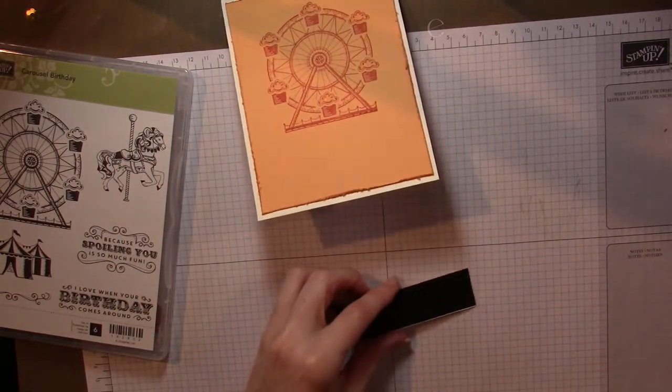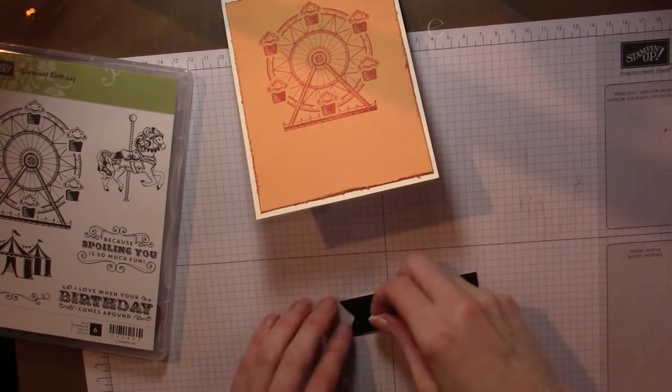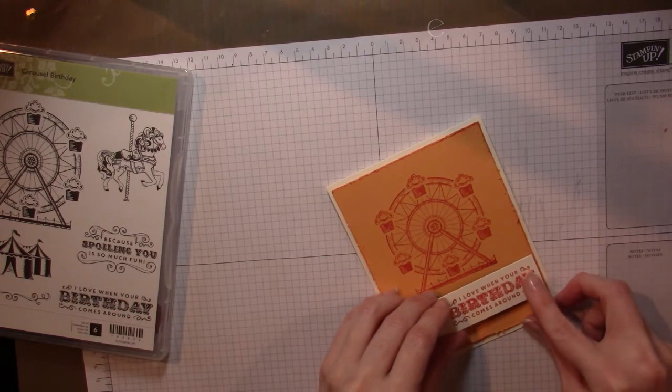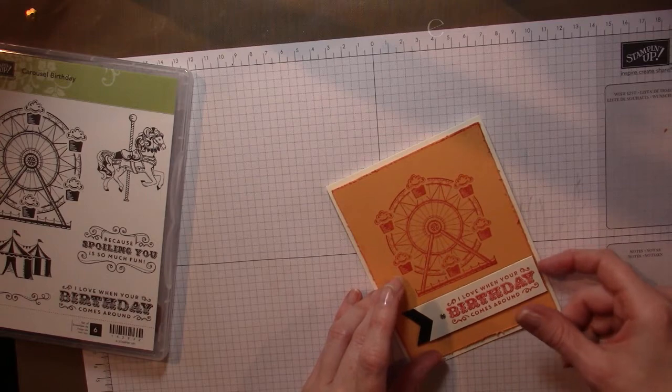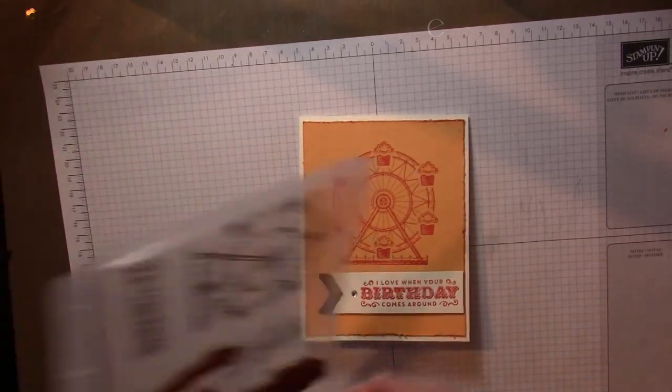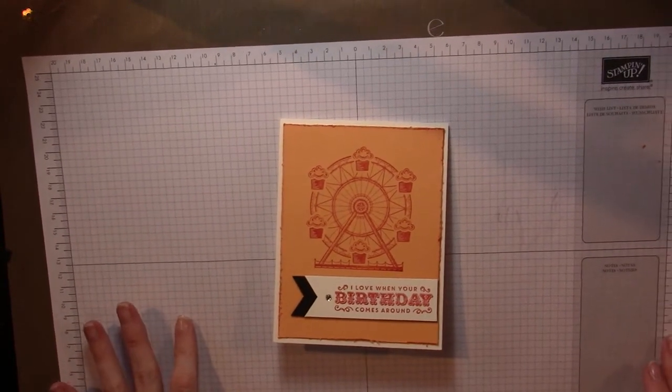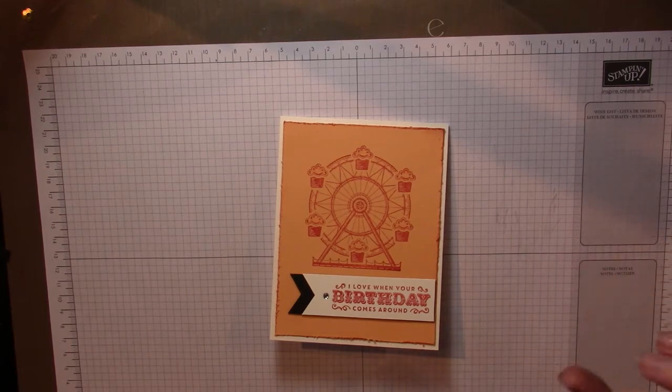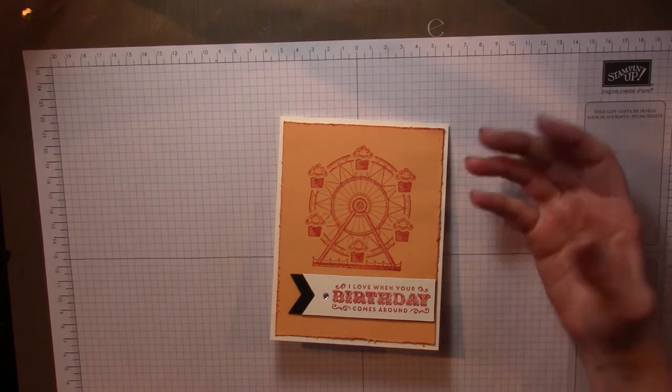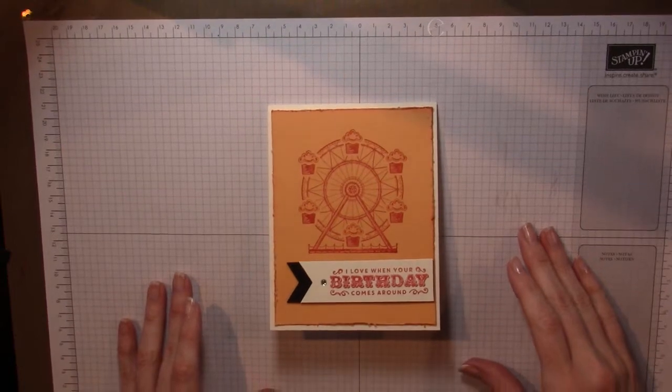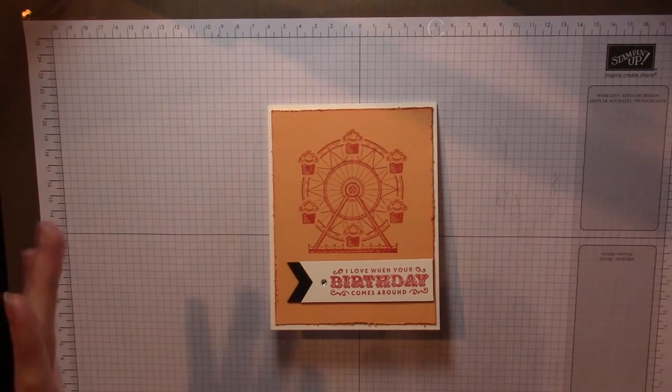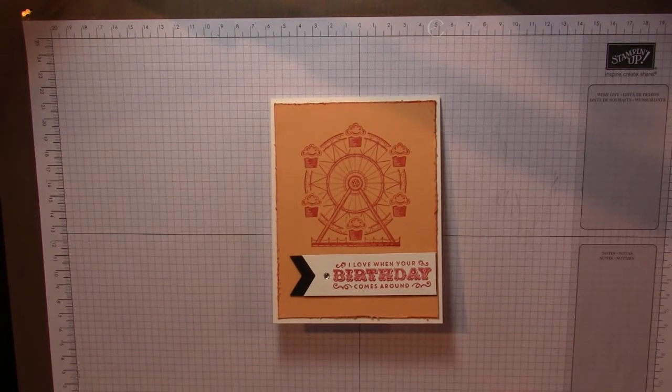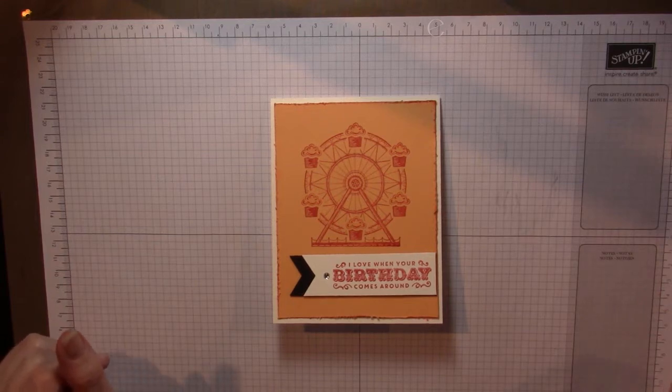Let it dry a little bit because we don't want to smudge. Let's get a couple dimensionals onto our sentiment here. And then we're just going to attach that right to the bottom. Going right up to where that little distressed edge is. I want that to show a little bit. But there we go. That is our finished card. Just as easy as that. If you have Stampin' Up has the gold and I believe the silver little stickles type thing. You could totally pop that on. That would give it a little bit more of a three dimensional feel. This is our quick and easy Easy Elegance birthday card using Carousel Birthday.